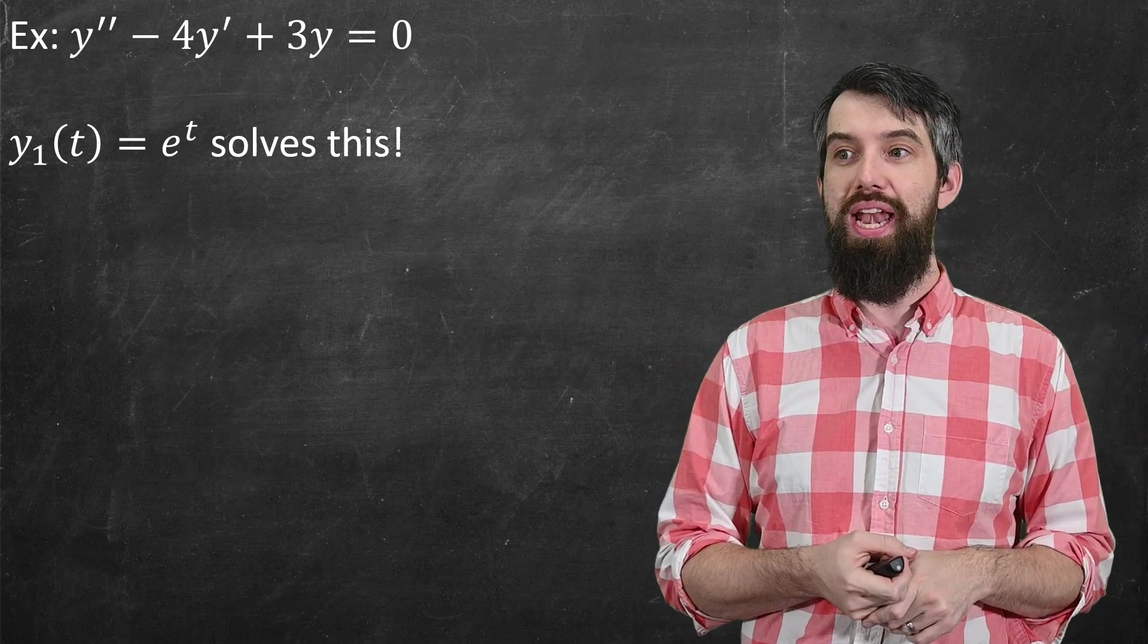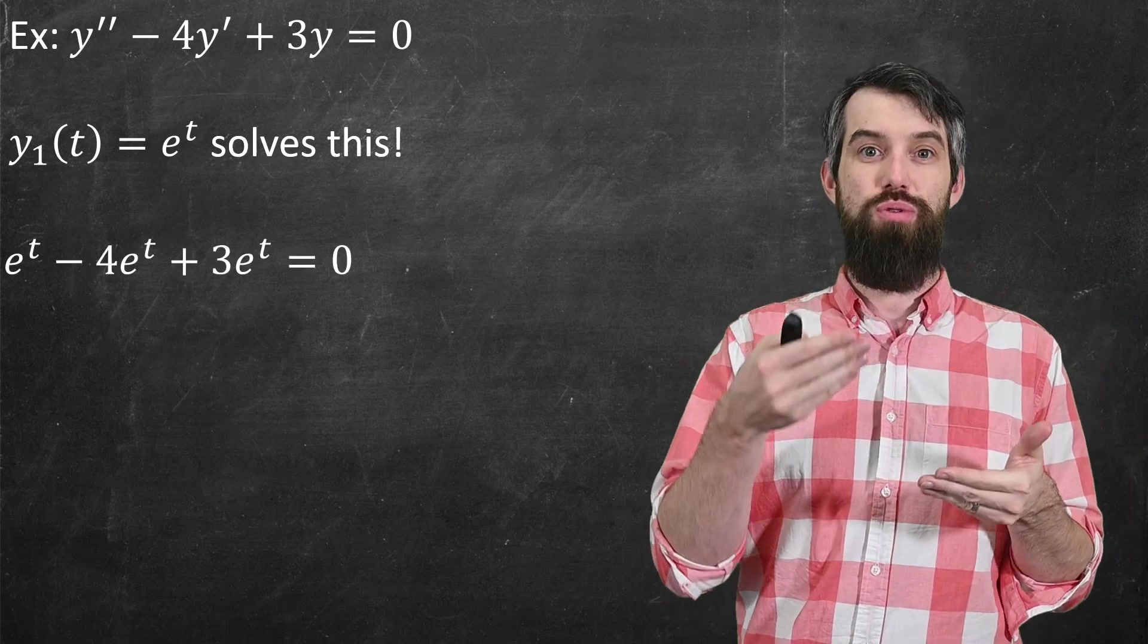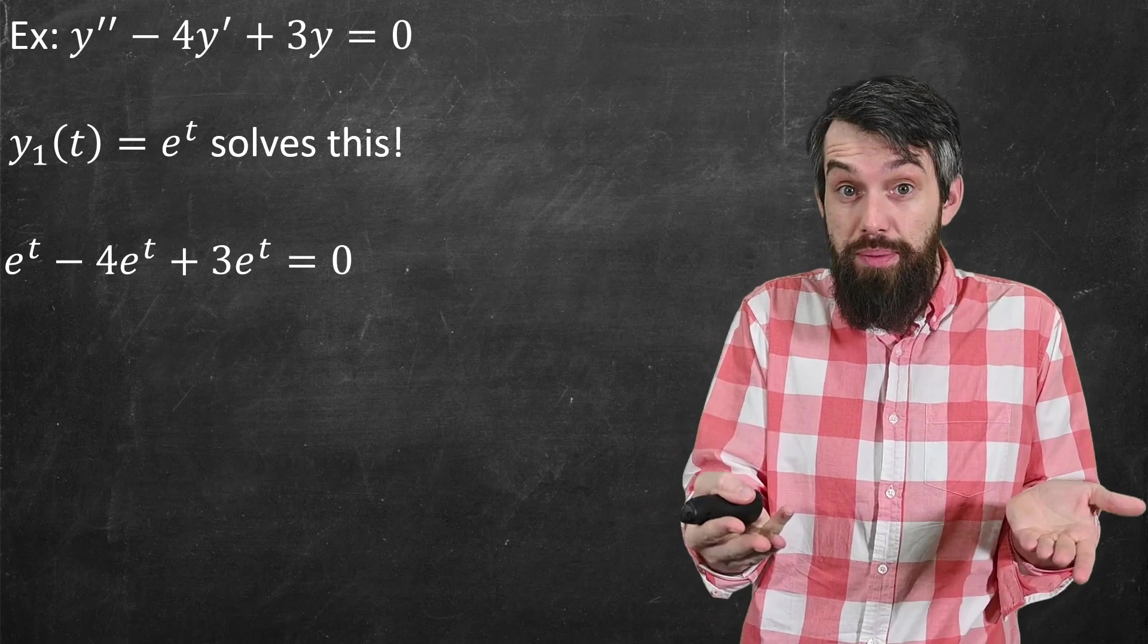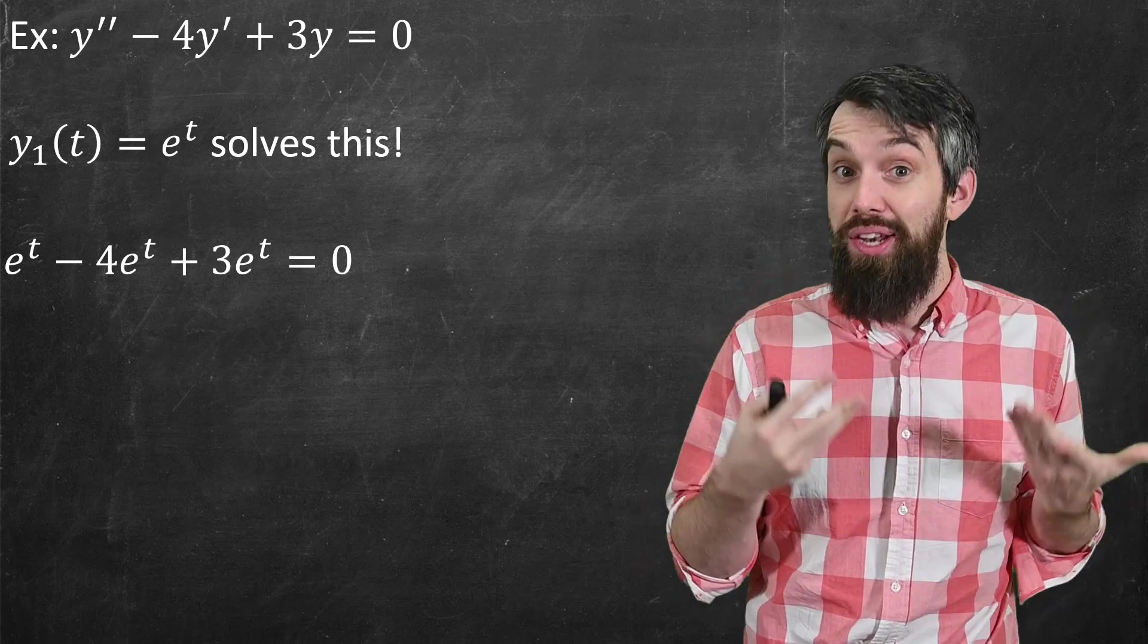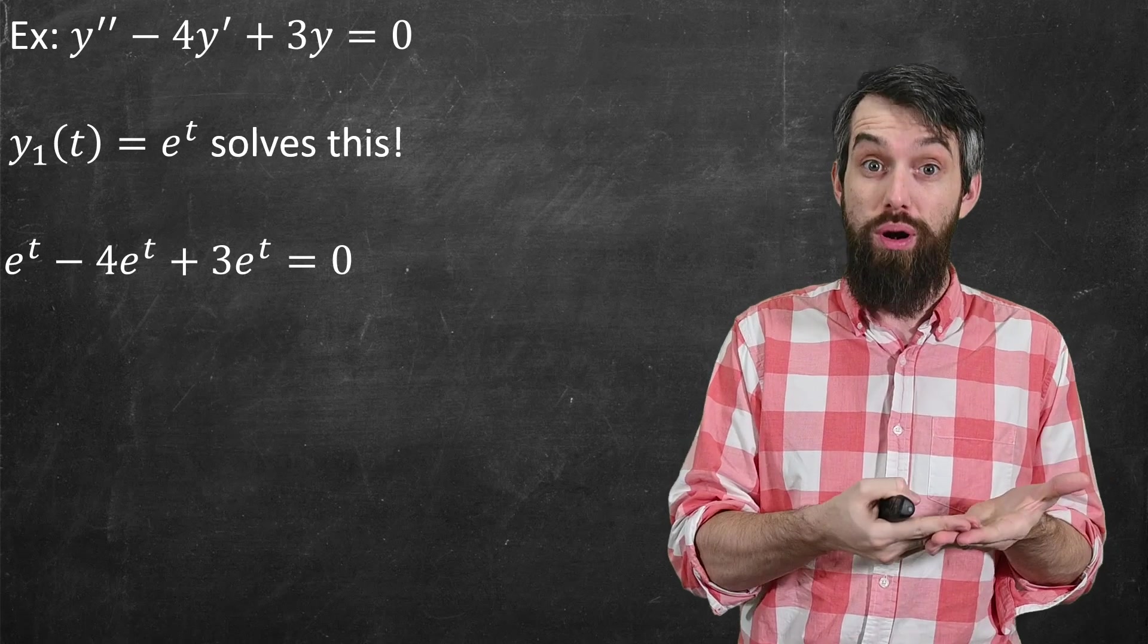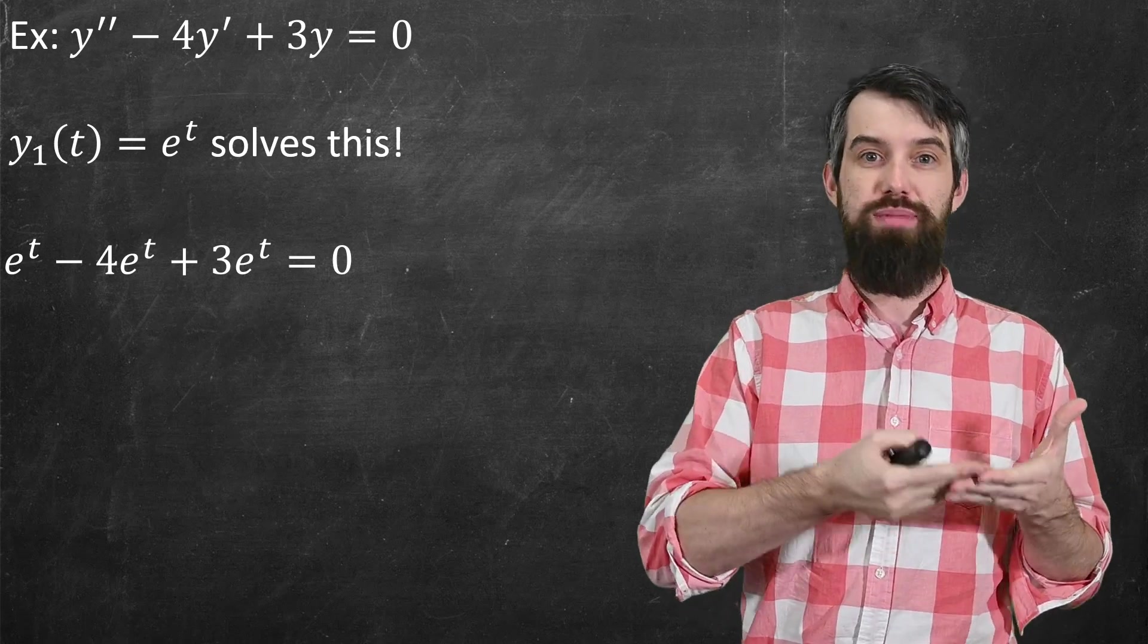Well, I'm going to plug it in, and I'm going to see that if I plug that in, so the derivative of e to the t is just e to the t, then I subtract off 1 derivative of e to the t times 4, which is just 4e to the t, and then plus 3 times e to the t.